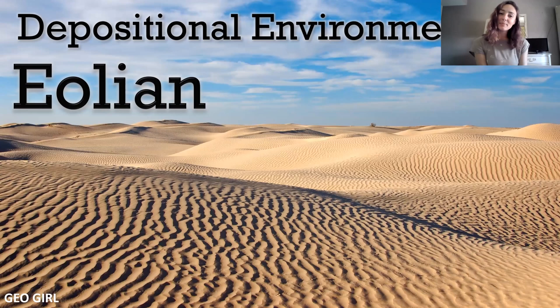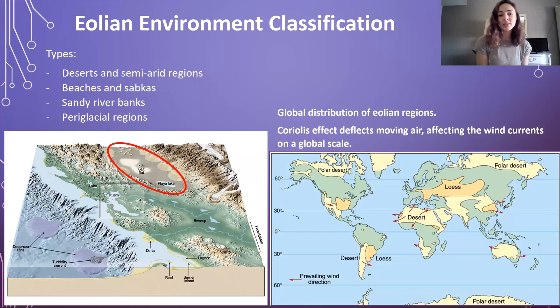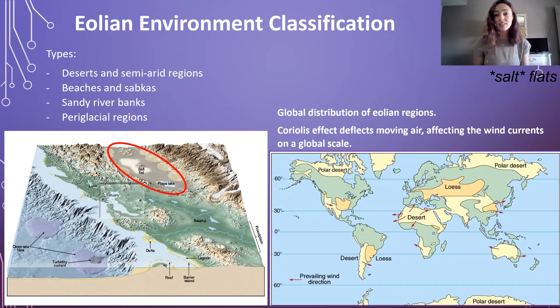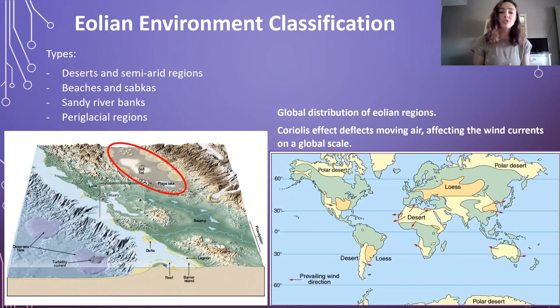Hi everyone, today we're going to be going over aeolian depositional environments, or deserts. So first we're going to talk about some classification of aeolian environments. Aeolian environments can include deserts and semi-arid regions, beaches and sabkas, which are sand flats, and sandy riverbanks and paraglacial regions. But we're going to be focusing on desert environments and desert bedforms and stratigraphy in this lecture.